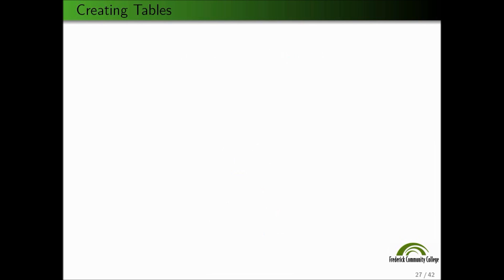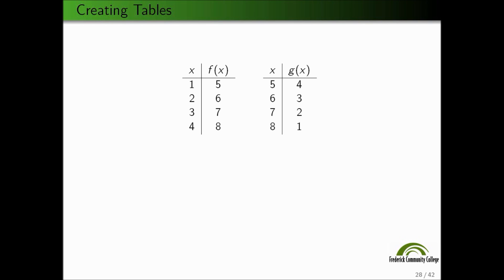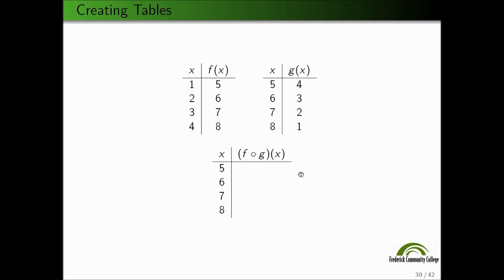Creating tables is the last thing in our target. Let's create a table for f composed with g. It's very important to figure out what the domain of this function is. The domain of f composed with g is the domain of g — 5, 6, 7, 8 — because when things go into this composition, the first thing that happens is they run through g. So f composed with g can only take on values that g can take on. Let's see: 5 gets sent into g, so g sends 5 to 4, then we take f of 4, and f sends 4 to 8. So f composed with g of 5 equals 8.